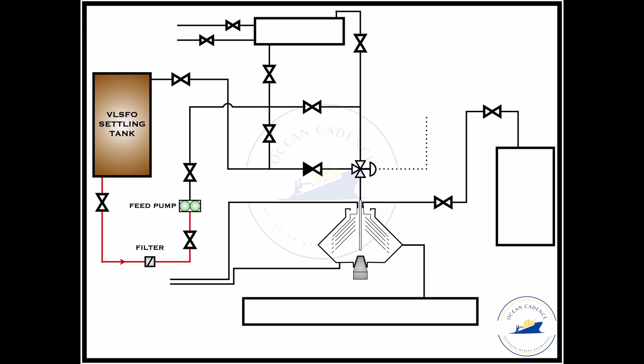The other elements except for the VLSFO settling tank and the feed pump in the circuit are: fuel oil heater prior to the purifier, thereafter the three-way valve leading the fuel into the purifier or back to the VLSFO settling tank, the purifier itself which is responsible for the purification process that is the separation of the fuel, sludge and water, the sludge tank where the sludge and water content is led to after removal, and the service tank.